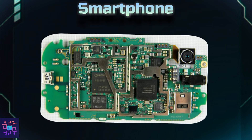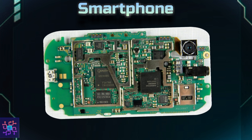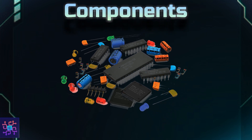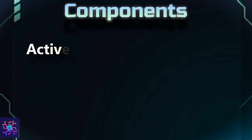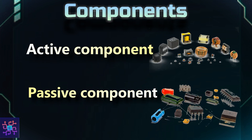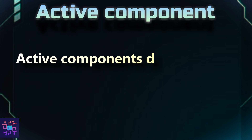Today we will discuss every basic electronic component category used in circuits — not only in a smartphone, but in any circuit from small to large scale. Electronic components can be classified into active components or passive components. It is easy to understand the difference between them by their names. First, we will discuss active components: active components deliver power or energy to the circuit.